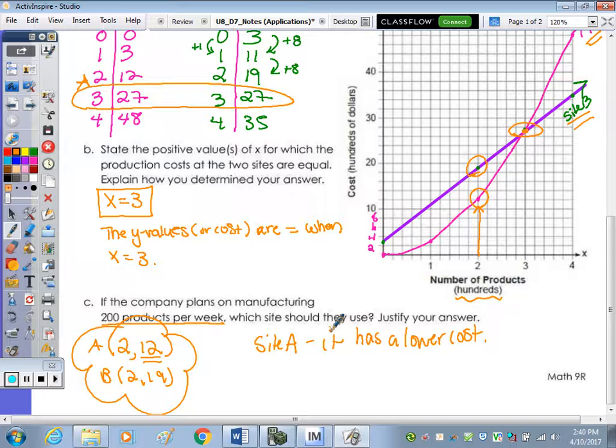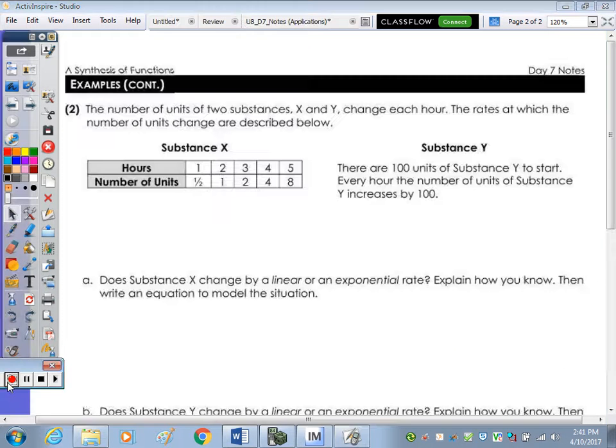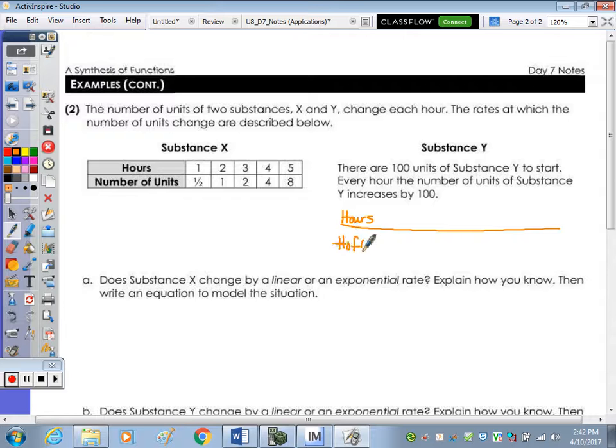Last one. Number 2. So same thing, take a moment to read number 2 and underline some key words, phrases. You can use a highlighter. Okay. So the number of units of two substances, X and Y, change each hour. The rates at which the number of units change are described below. So we have two substances and they're describing the substances or we're looking at the data of hours and number of units. You don't see a table for substance Y, but you could make one. So let's make one.